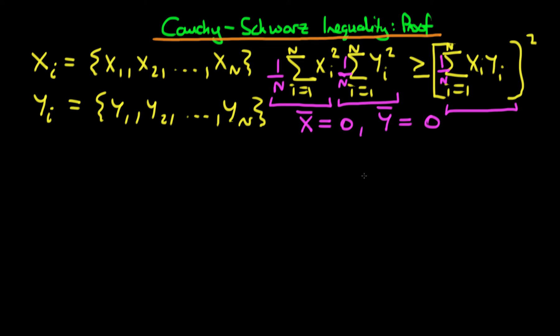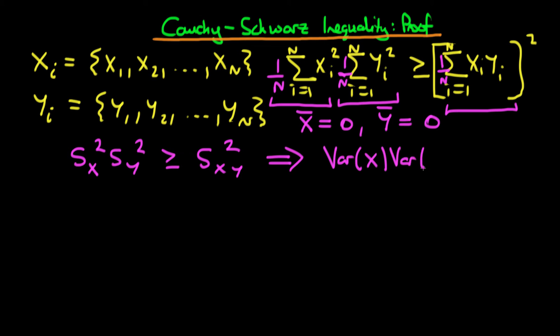Stated in this form, the Cauchy-Schwarz inequality actually says that the sample variance of x times the sample variance of y must be greater than or equal to the sample covariance of x and y, all squared. That's a quite useful result. And even though this isn't a direct proof of this, you can also show that this holds in the population — hence the variance of x times the variance of y is greater than or equal to the covariance of x with y, all squared.